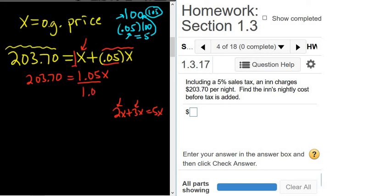To finish, you just divide by 1.05. Let's see what this is going to cost. I'm going to put this in my calculator. So this is 203.7 divided by 1.05.